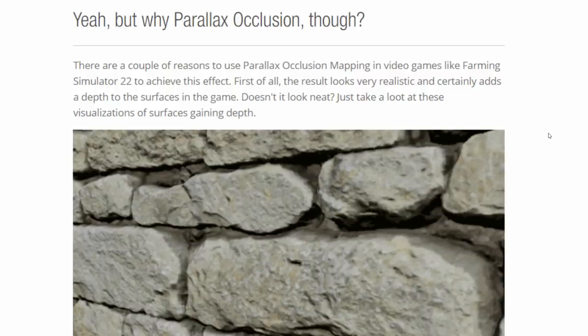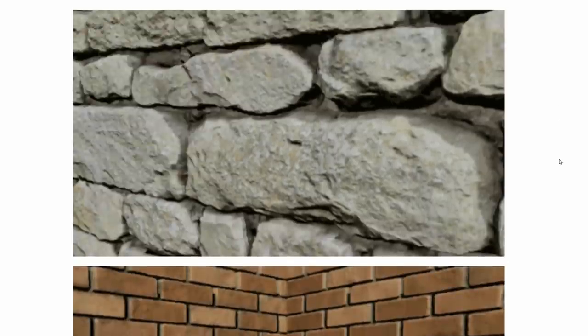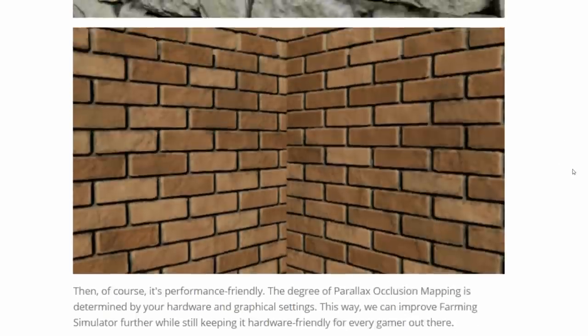Just take a look at these visualisations of surfaces gaining depth. We've got a stone wall here — it's pretty self-explanatory. Now you've heard about it, you can see that it doesn't appear 2D. There is depth in that wall. The same with the bricks — you can see that the bricks and mortar have different depths.